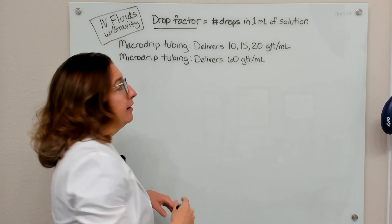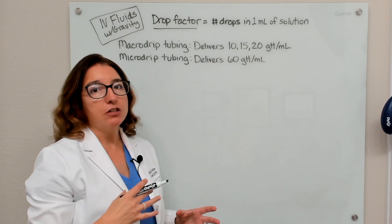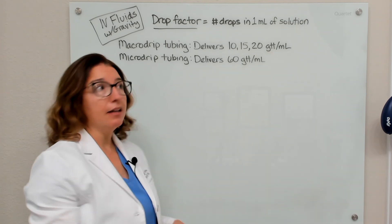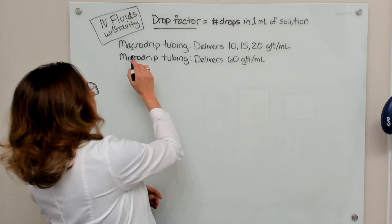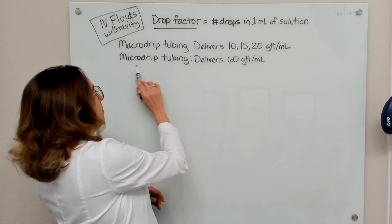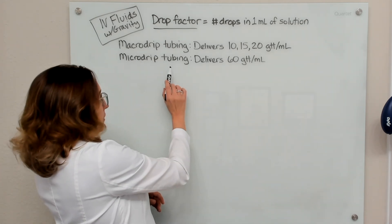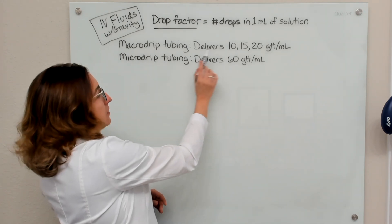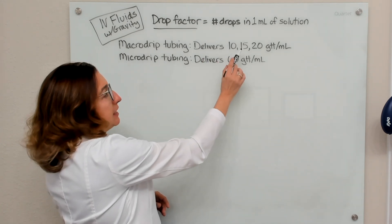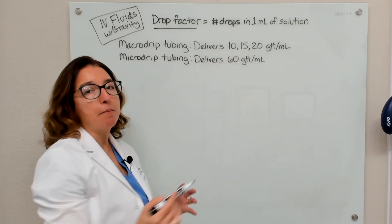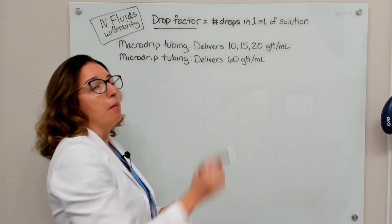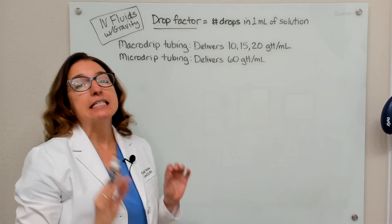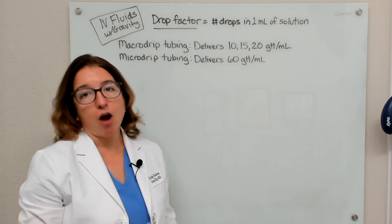IV tubing for delivering IV fluids through gravity can either be macro drip tubing or micro drip tubing. Macro drip tubing delivers 10, 15, or 20 drops per ml. Micro drip tubing delivers 60 drops per ml.